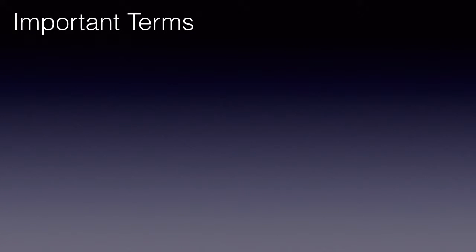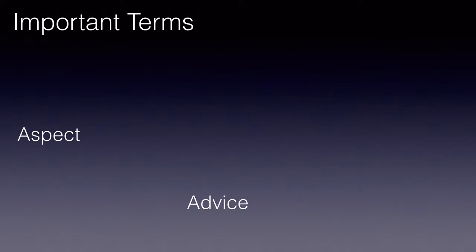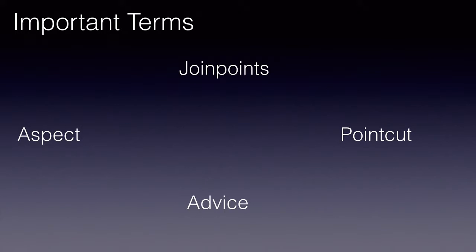In this lecture, you will learn the four important concepts of aspect-oriented programming. They are: number one, an aspect; two, an advice; three, a point cut; and finally, join points.